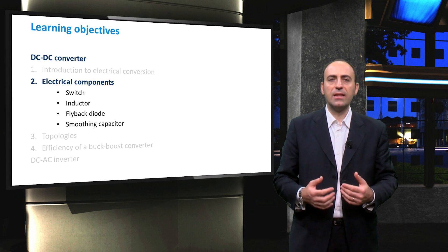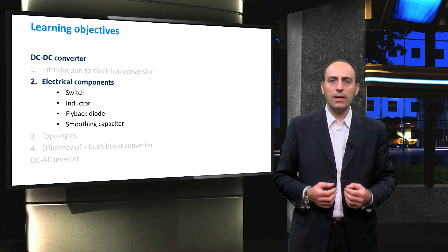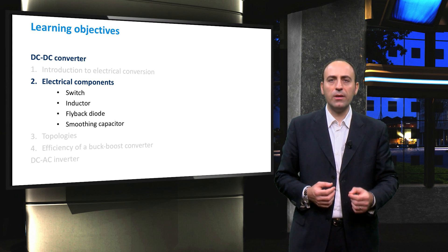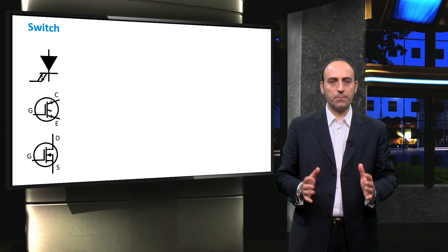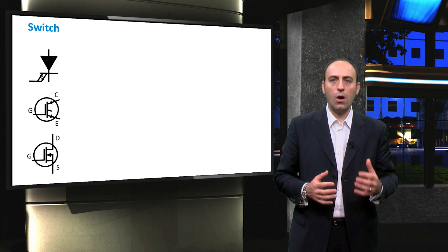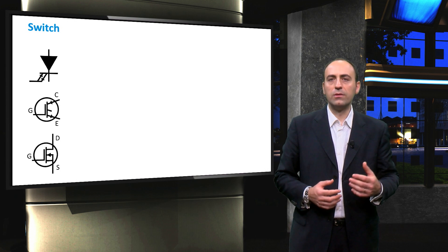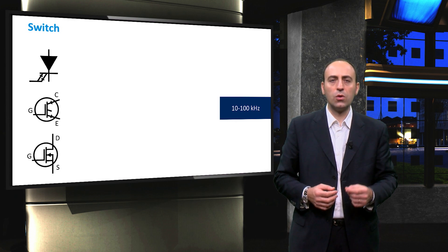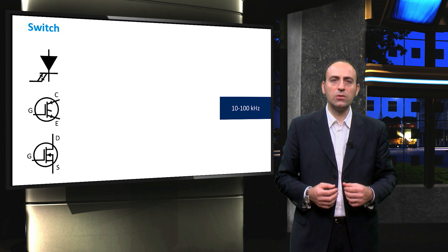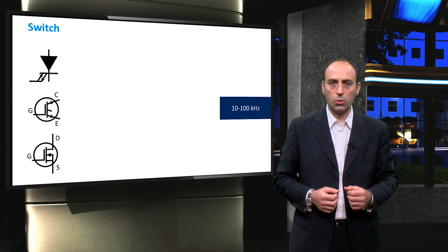Then, once we understand how these components work, in the next video we shall deploy them in various topologies. First of all, we need switches which are designed to turn on and off rapidly from 10 to hundreds of kHz, in order to be quick enough but also not too fast to decrease eventually high-frequency harmonic distortion.